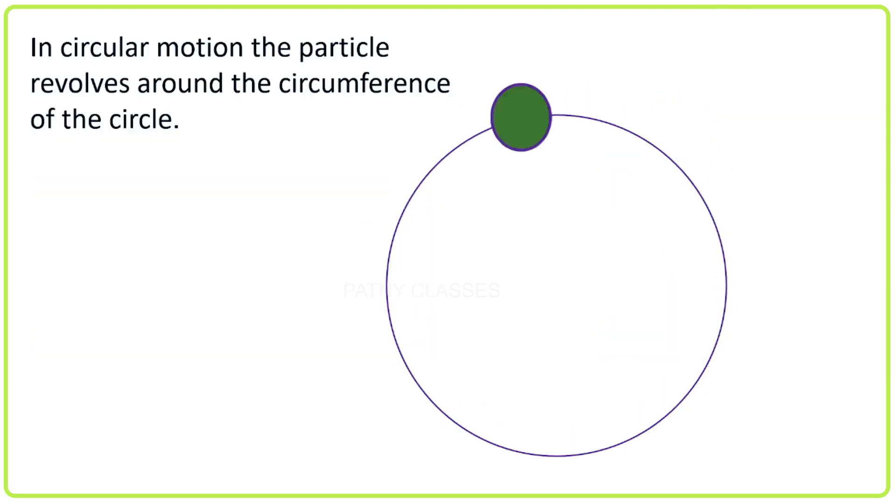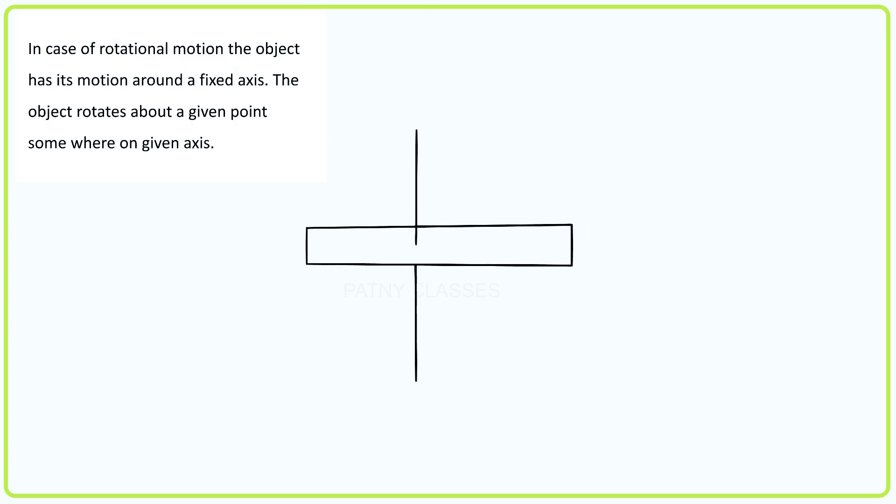In circular motion the particle revolves around the circumference of the circle. In case of rotational motion the object has its motion around a fixed axis. The object rotates about the given point somewhere on the given axis.